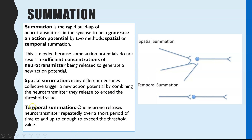Temporal summation — tempo in music is timing, so temporal refers to time. With temporal summation you only have one neuron attached to the next. It is when one neuron releases neurotransmitter repeatedly over a short period of time until the threshold is exceeded. If the stimulus is big enough or is repeatedly triggering that action potential, you'll have lots and lots of neurotransmitter being released over time to trigger the action potential in the next neuron.